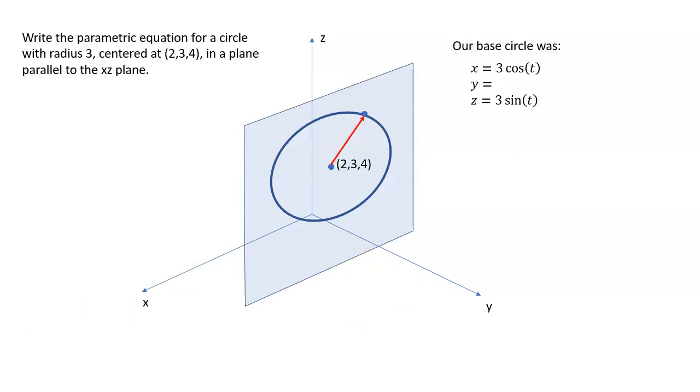So in order to parameterize a circle of radius 3, we can use x equals 3 cosine t, z equals 3 sine t. It's that cosine and sine pair that give us the rotation. Let's pop back into 3D now.